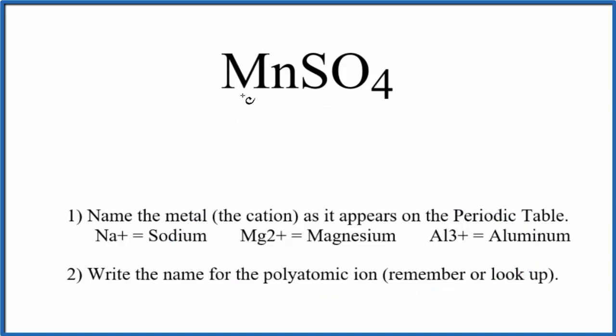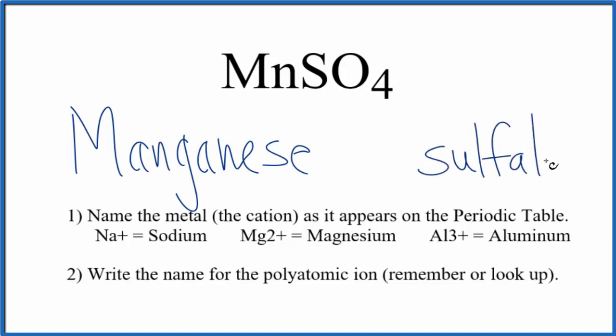So first we'll write the name of the metal. That's the manganese. Then we can write the name for the polyatomic ion. That's the sulfate ion. Lowercase s, and the name so far is manganese sulfate.